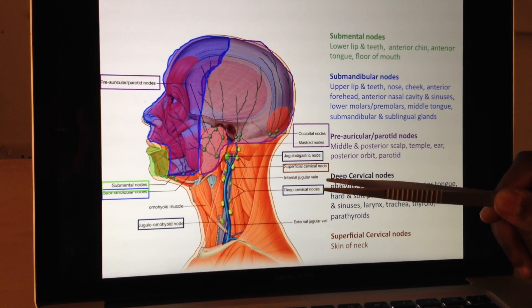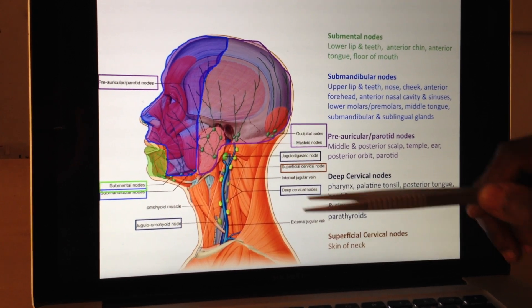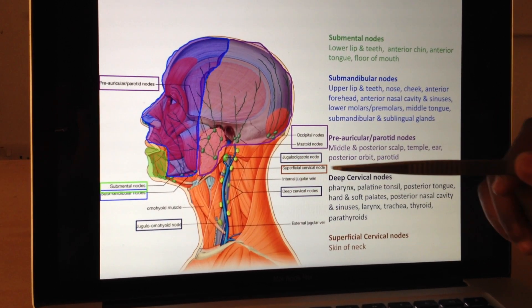And the last node is the superficial cervical node, and that's going to drain basically the skin of the neck.